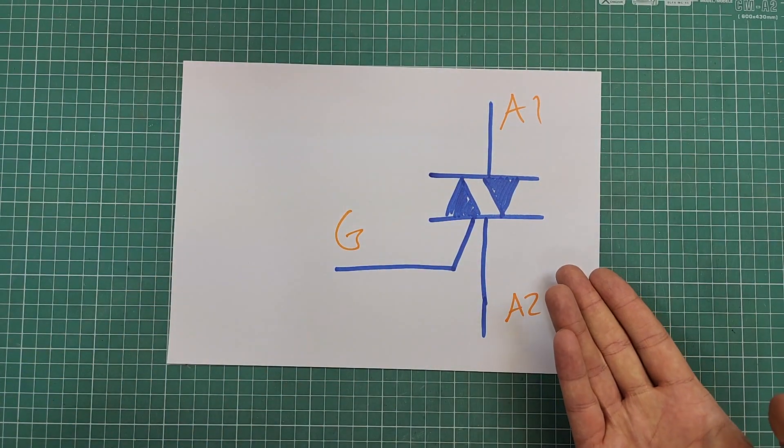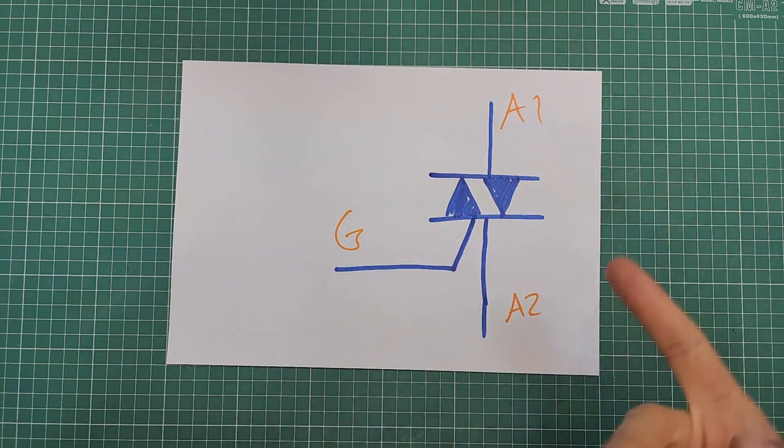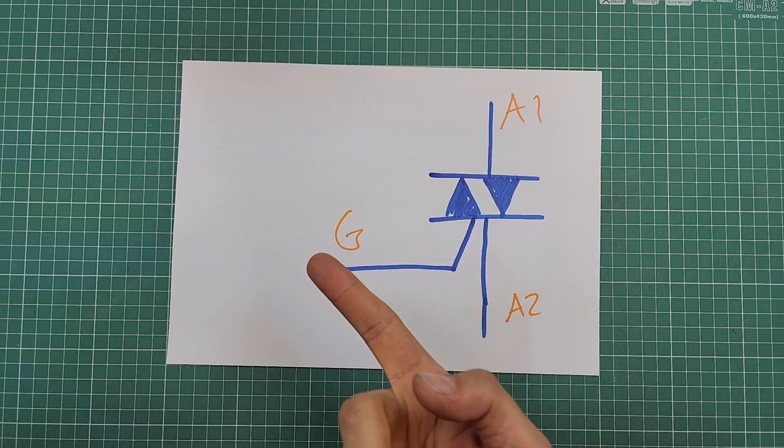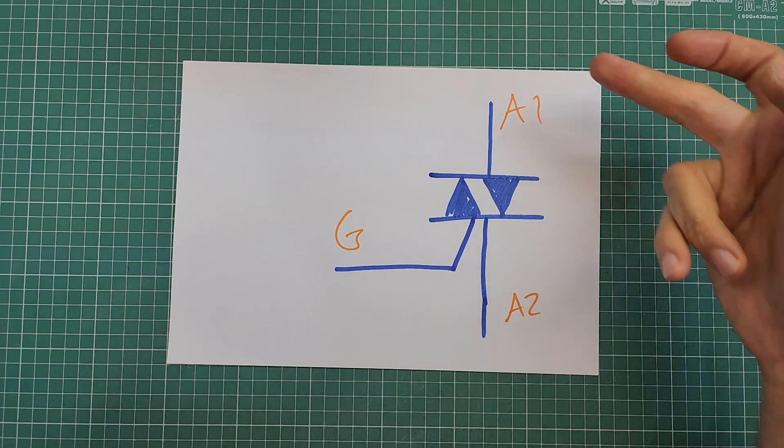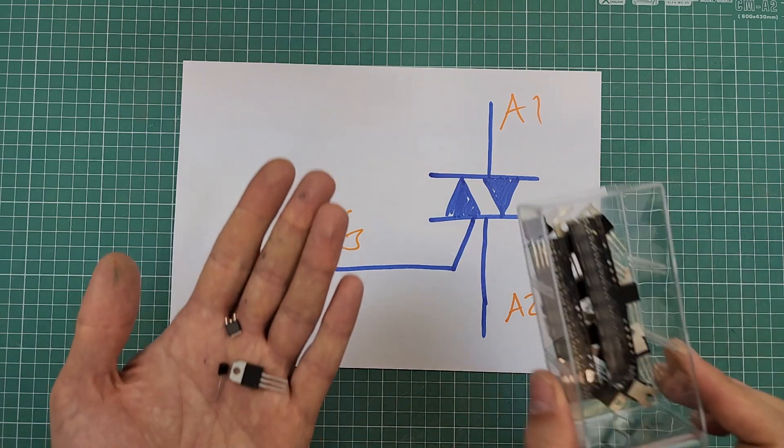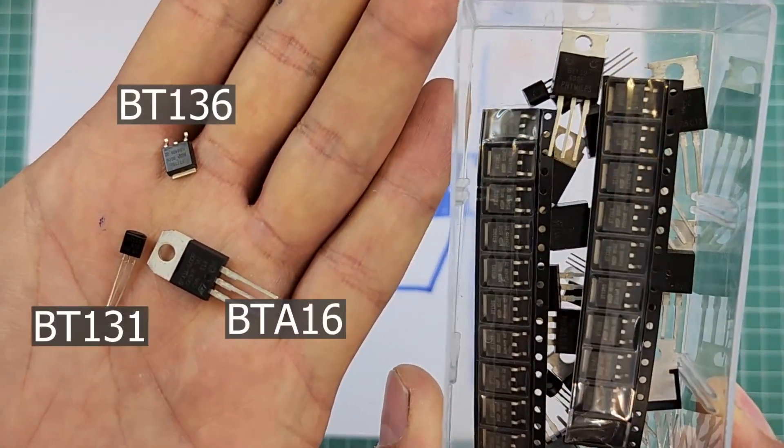This is a schematic symbol of a TRIAC. It has three terminals: gate and two anodes, A1 and A2. By triggering the gate terminal, the TRIAC starts to conduct AC voltage through its anode terminals. TRIACs are used inside many home appliances — for example, in vacuum cleaners they control the speed of the motor to adjust the power of suction, or in some lighting systems they dim AC light bulbs. Using TRIACs is dangerous for beginners, and you need to know many points about them to use them safely and efficiently.